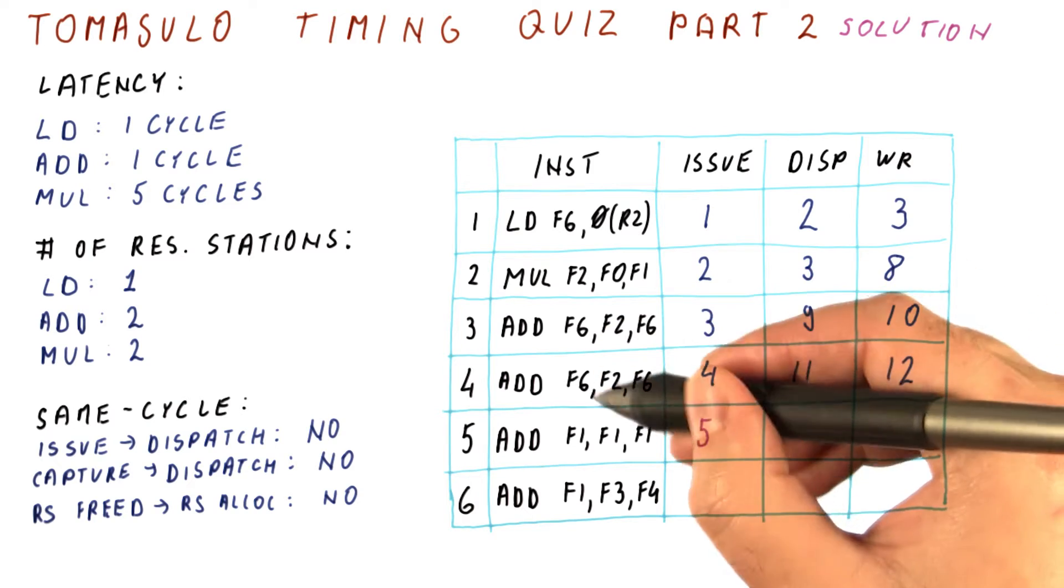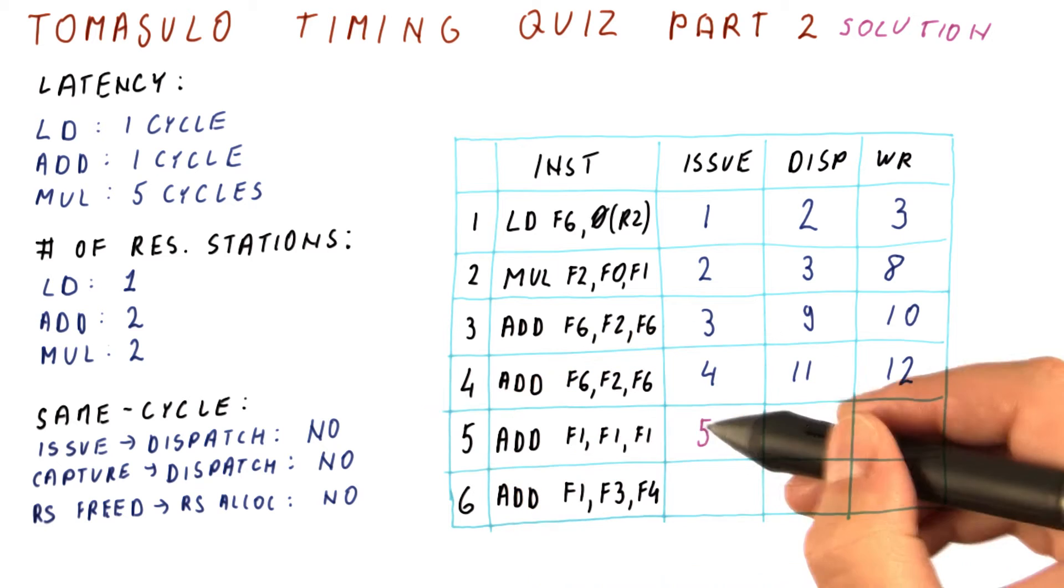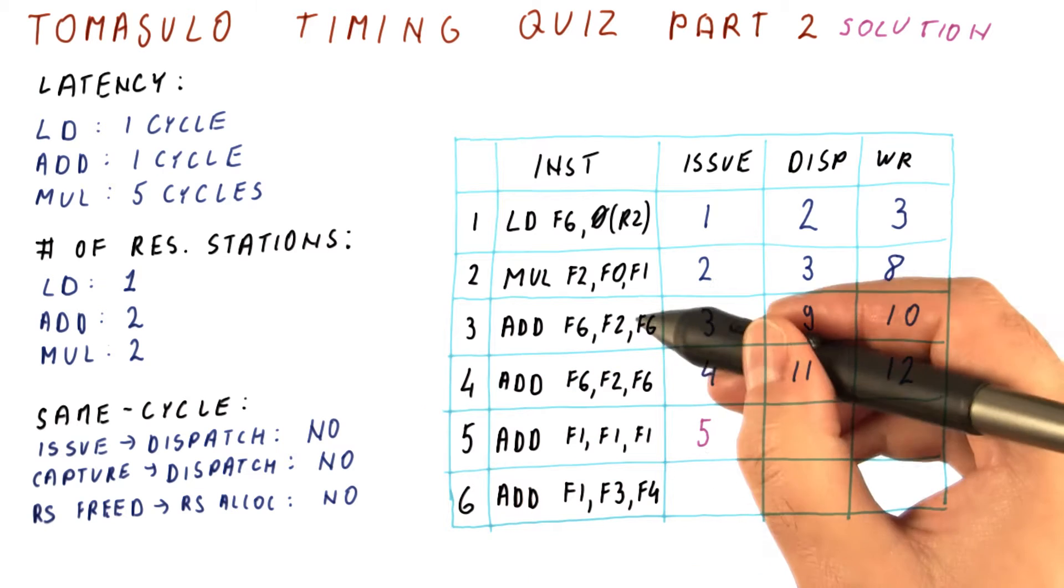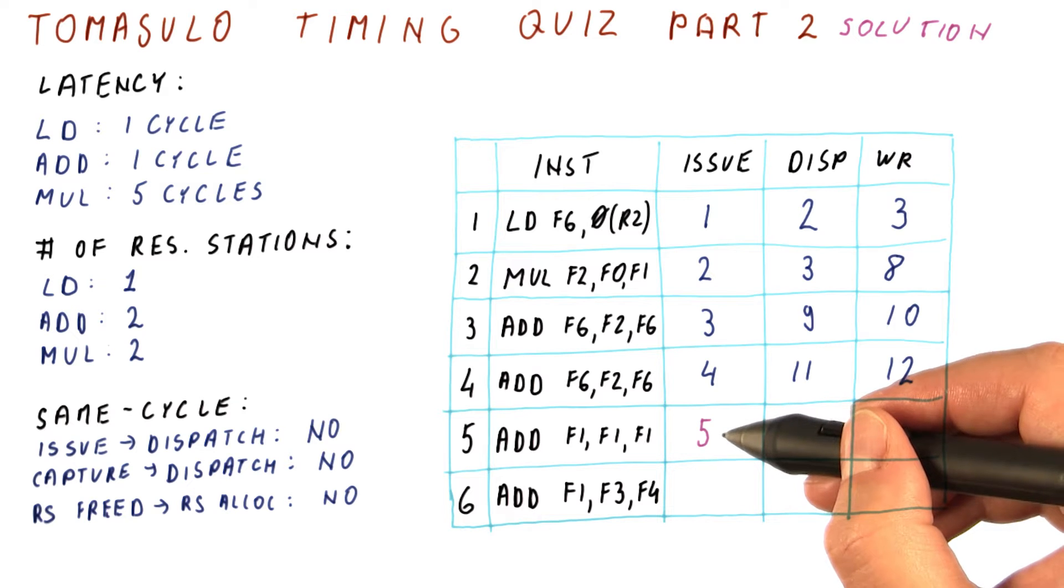At this time, we have already issued two ADDs, so we have occupied both of the reservation stations. So one is available here only if one of these two ADDs frees a reservation station before cycle five.